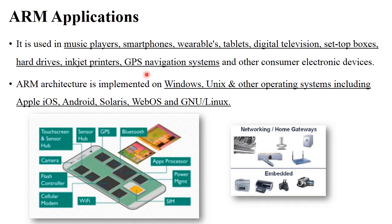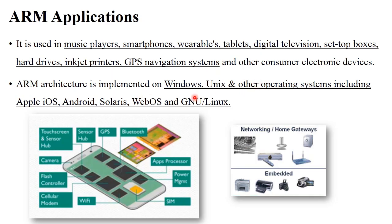The next point is applications of ARM processor. ARM processor is used in many electronics devices like music players, smartphones, wearable devices, tablets, digital televisions, set-top boxes, and different systems like hard drives, inkjet printers, and GPS navigation systems. ARM architecture is also implemented on different operating systems — it supports Windows, Unix, and other operating systems like Apple iOS, Android, Solaris, WebOS, GNU, and Linux.